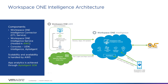This is an ETL service — it's extracting, transforming, and loading that data. If we're running Workspace ONE UEM as a SaaS tenant, there's nothing to deploy; turning it on and accepting it running will deploy that ETL service. When we're running Workspace ONE UEM on-premises, we need to install that connector onto a Windows Server.